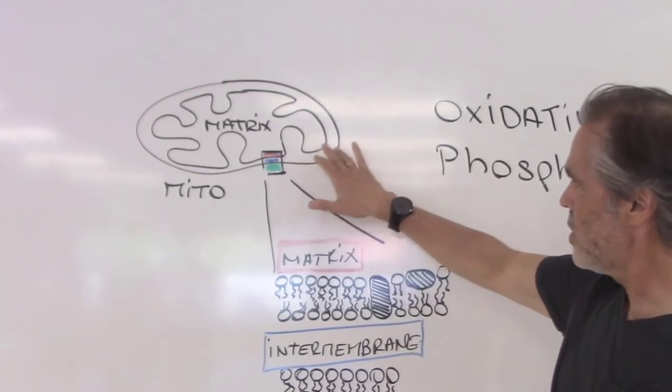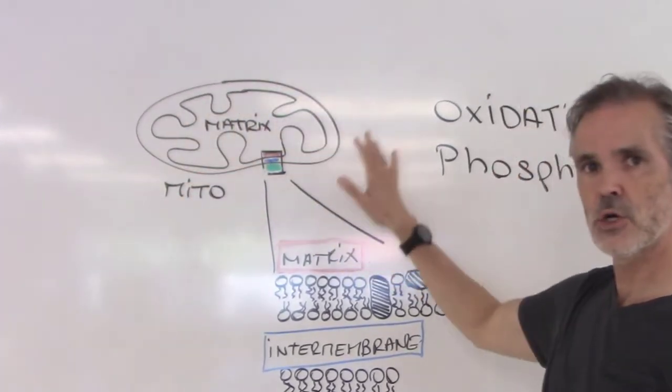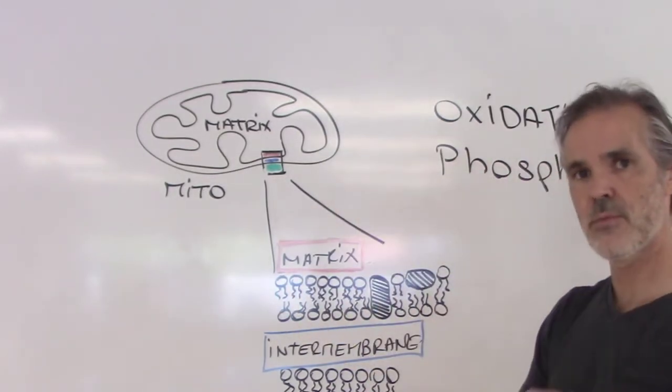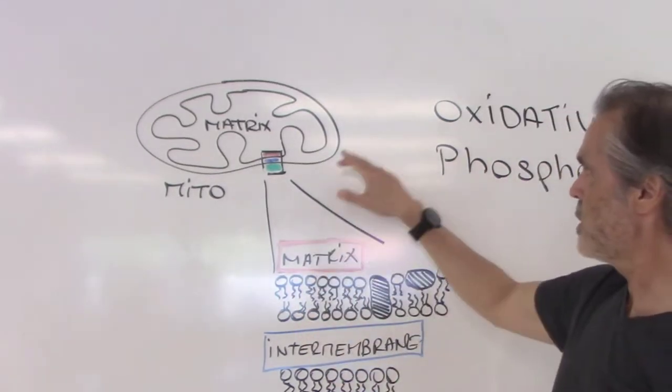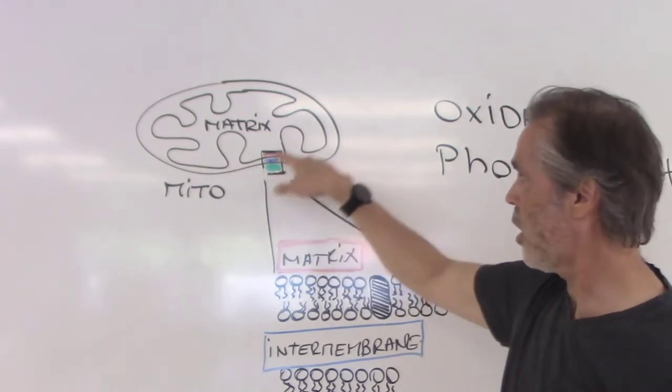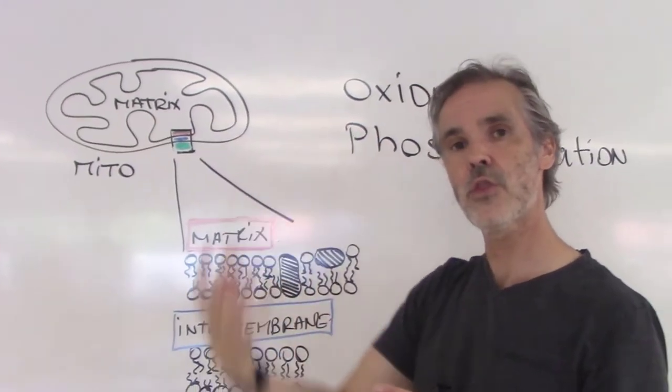When you look at the outside of the mitochondria, that is a membrane. When we look on the inside of the mitochondria and all the folds here, that's another membrane.